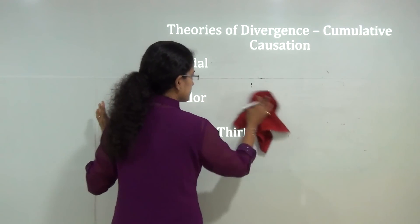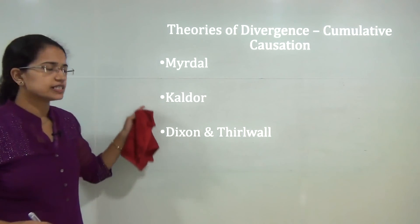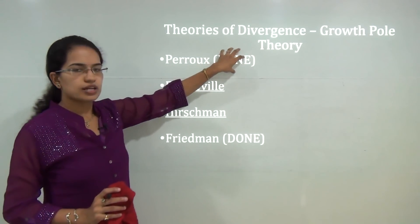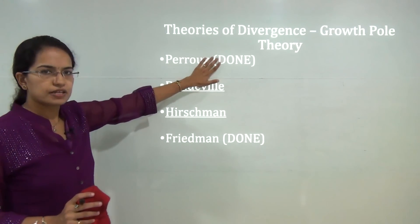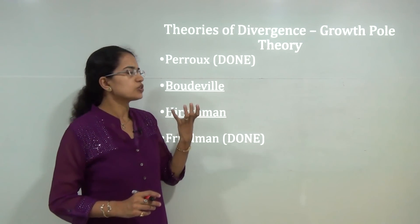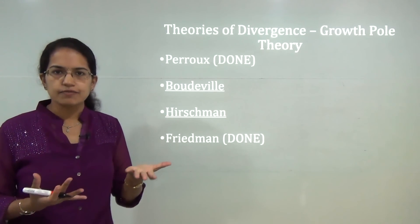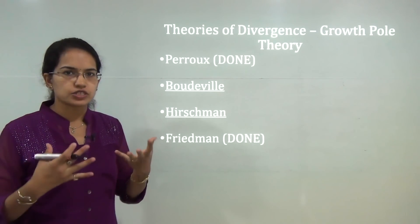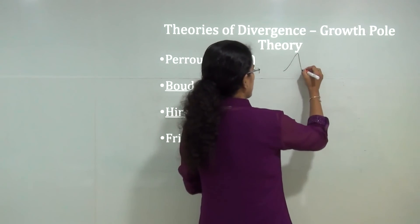These three were the basic theories under cumulative causation, the most important being Myrdal's theory. Myrdal talked about the spread and backwash effects. The next is the growth pole theory. We have already covered Perroux's theory — he talked about the growth pole. Then you have Boudeville, Hirschman, and Friedman's theories. Perroux basically talked about space as a force — a network that exists in reality generating force from a propulsive firm. A more propulsive firm would generate more force and attract more industries, creating a growth pole.